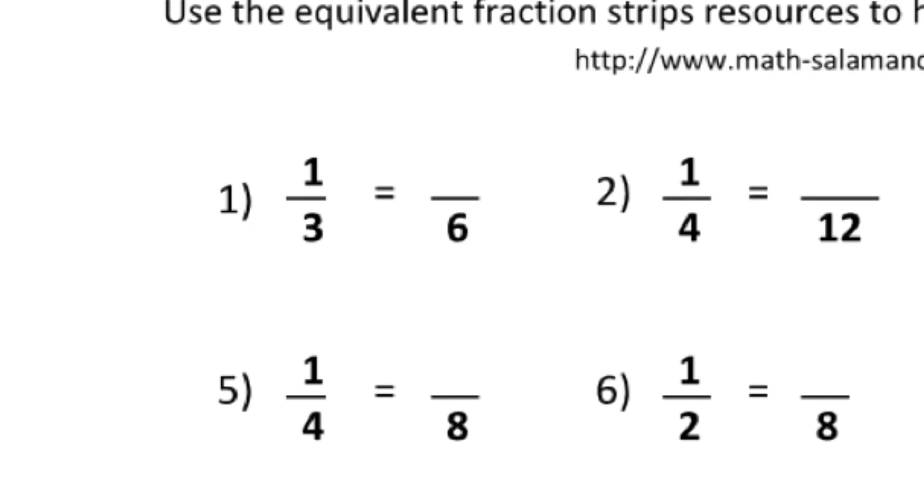So in number 1, I know the 3 and the 6. I know that I can do 3 times 2 is 6. So how do I get that unknown number? Well, I do the same thing to the top, 1 times 2, which means the equivalent fractions there are 1 over 3 equals 2 over 6.